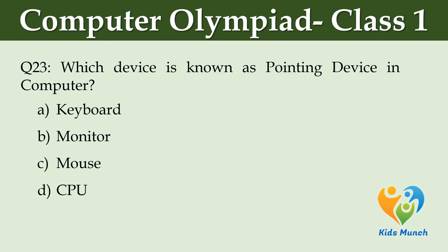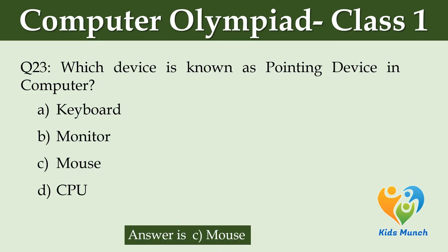Which device is known as a pointing device in a computer? Option A: Keyboard. Option B: Monitor. Option C: Mouse. Option D: CPU.